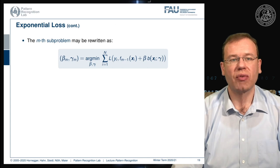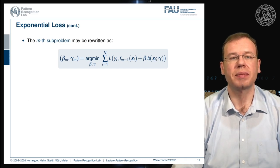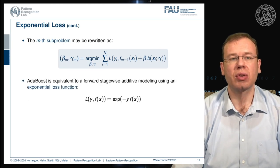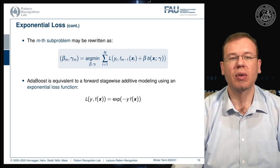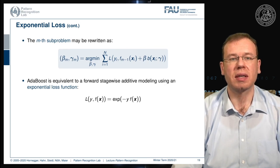We have the same sub-problem formulated as follows: we essentially have the loss of the M minus one solution plus beta and the current estimate, and we are minimizing over gamma and beta. AdaBoost can be shown to be equivalent to forward stage-wise additive modeling using an exponential loss function. If our loss function equals the exponent of minus y times f of x, we are essentially constructing the AdaBoost loss.